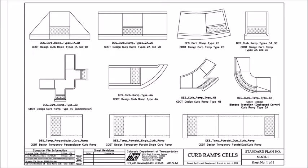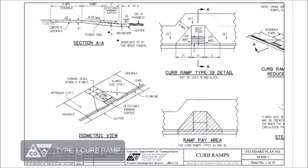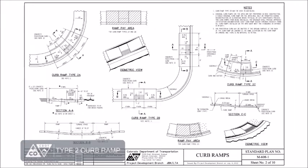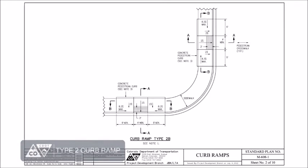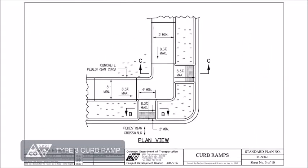There are five types of curb ramps. Type 1 has one or two flared sides and a turning space at the top of the curb ramp. Type 2 has the turning space at the bottom and there are one or two curb ramps leading up to the pedestrian access route. Type 3 has return curbs on both sides and the turning space at the top of the curb ramp.